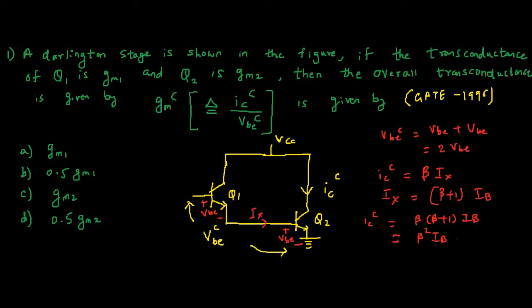We can write this as IC2. So GM will now become IC2 upon 2 VBE. This is nothing but 0.5 times GM2. Calculating this was not required, I just wanted to illustrate the current equation of Darlington pair. This is nothing but IC2, that is current of second BJT, and then we have 2 times VBE.